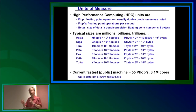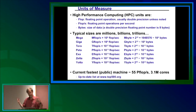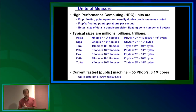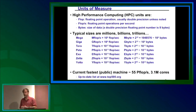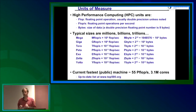The current fastest publicly acknowledged machine runs at 55 petaflops and does 3.1 million things at the same time. You can imagine the challenge of dividing your problem into 3 million pieces and coordinating them. That machine is in China. There's a race every six months posted at top500.org where people race on a standard benchmark, and the list is updated twice a year.